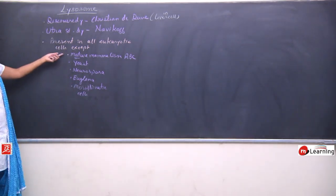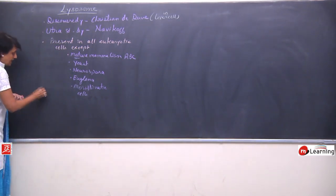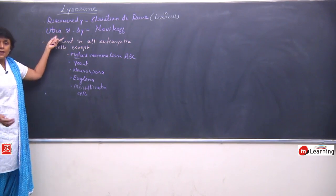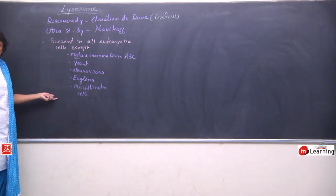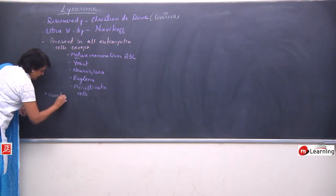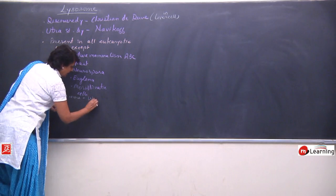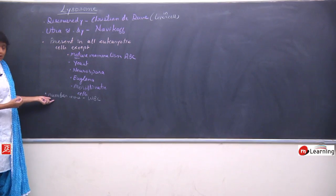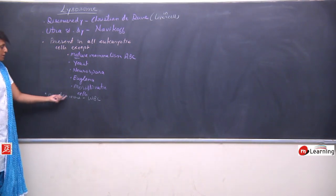So these are some eukaryotic cells where lysosomes are absent. The number of lysosomes depends on the activity of the cell. Lysosomes have enzymes, so if a cell is helping in digestion or breakdown of something, it would have more lysosomes. For example, the number would be more in WBCs, where phagocytic WBCs engulf foreign particles and lysosomes help in their digestion.